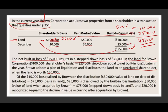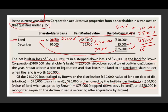Now, how much of that $45,000 realized loss is actually recognized? Some of the losses occurred after we contributed the asset. Remember, the fair market value was $50,000 at contribution, then it dropped to $30,000 — that additional $20,000 decline occurred after we contributed the asset. Of the $45,000 loss realized, $25,000 is disallowed by the built-in loss limitation, and the remaining $20,000 is recognized. The $20,000 happened after the contribution and is allowed, while $25,000 is not allowed because it is considered prior to the contribution.